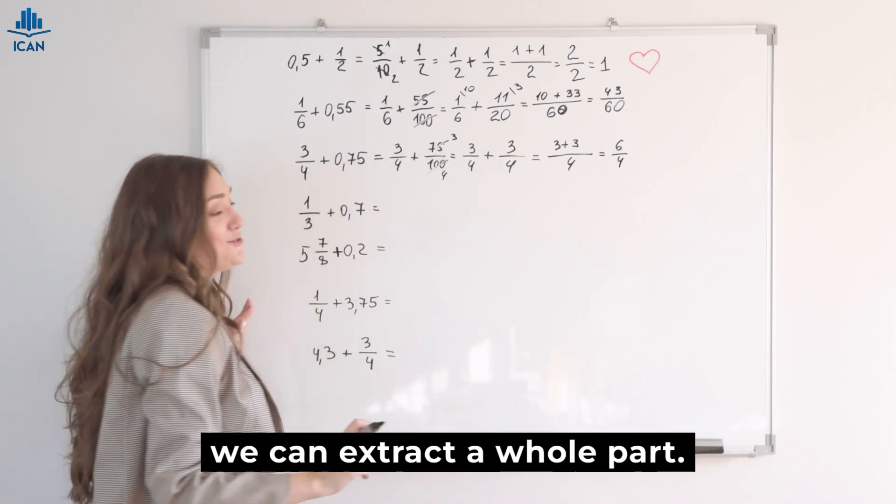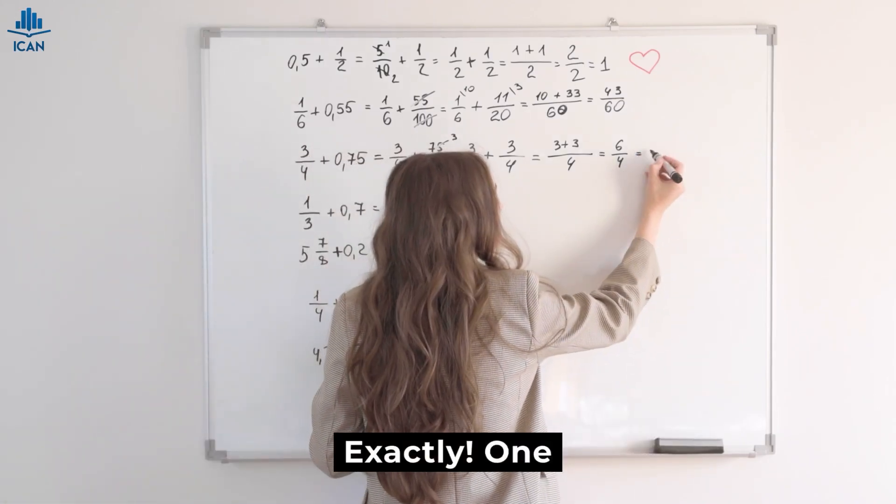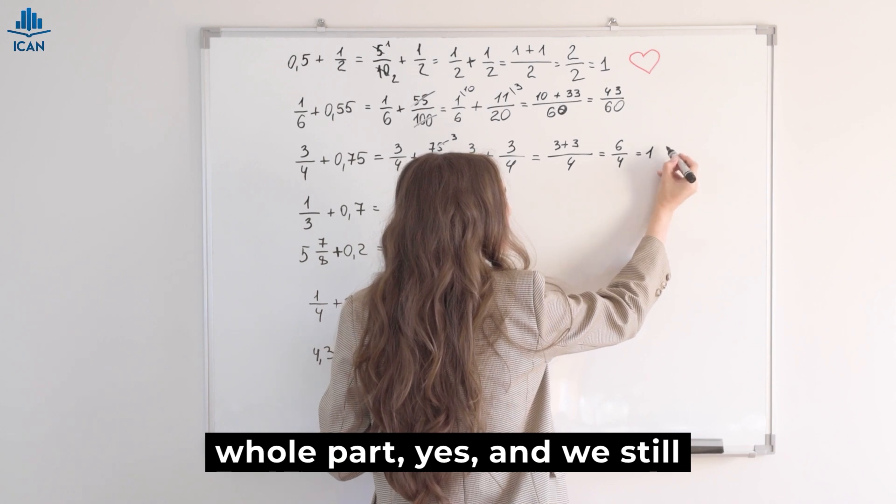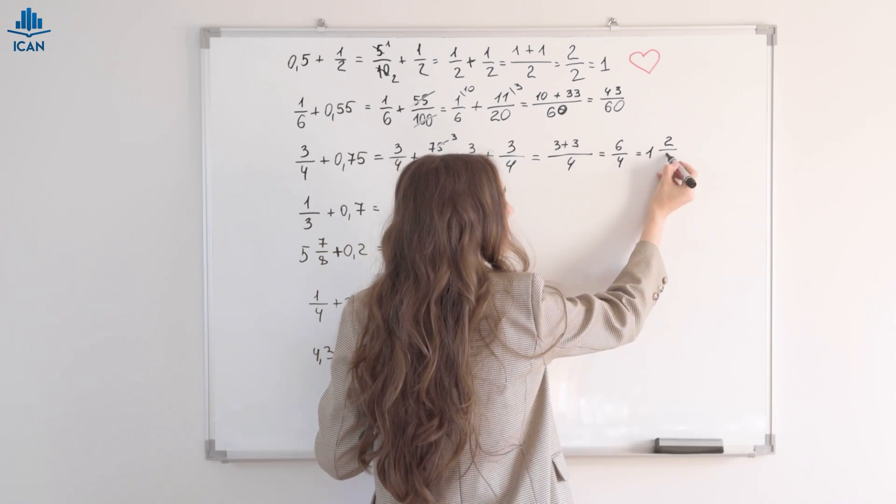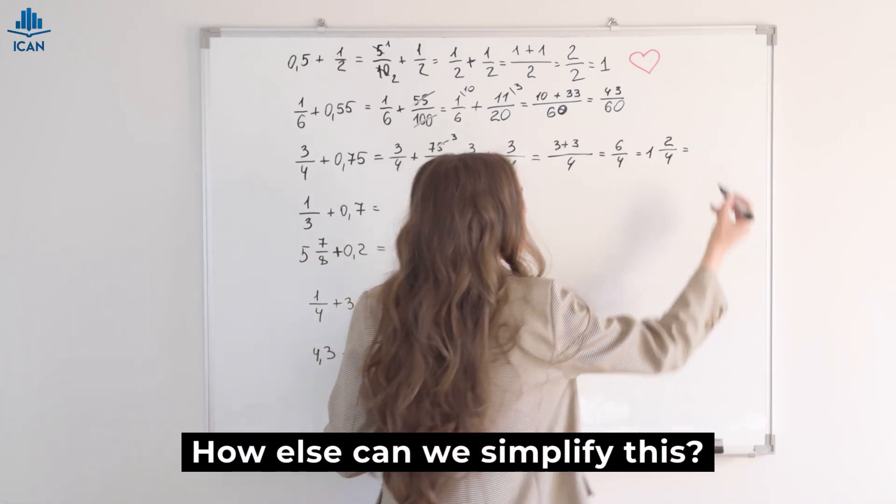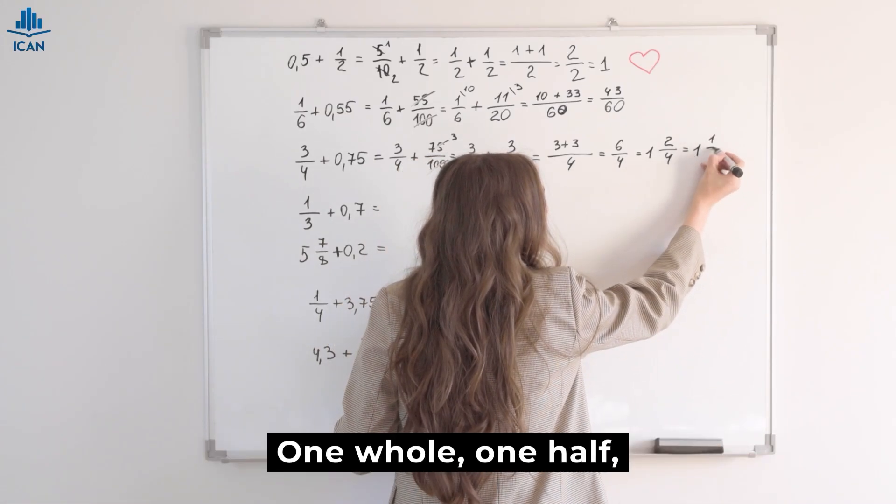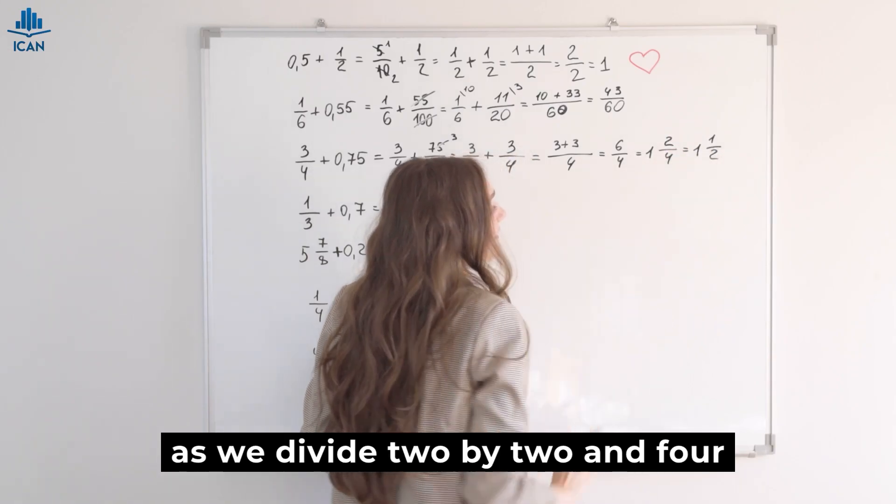We can extract a whole part. Exactly. One whole part, yes. And we still have six minus four, which is two-fourths. How else can we simplify this? One whole, one half, as we divide two by two and four by two.